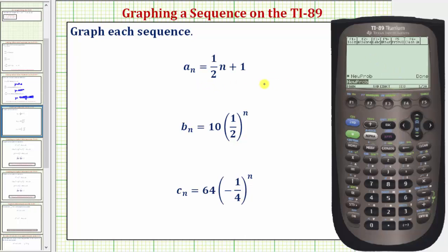Next we enter the formula that generates the terms in the sequence. We'll first graph a sub n. If we press y equals by pressing diamond F1, we need to enter in one half n plus one here. So let's go ahead and clear this, and we'll enter one divided by two, n is alpha six, and then plus one, enter.